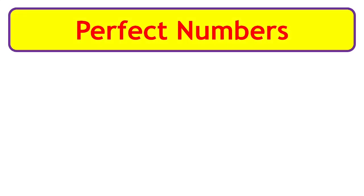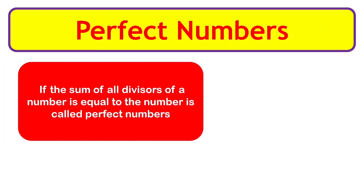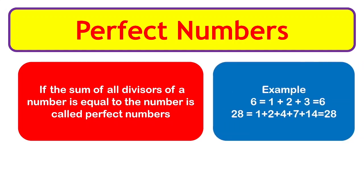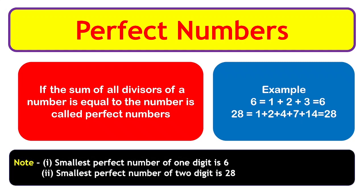Perfect numbers: if the sum of all divisors of a number equals the number itself, it is called a perfect number. Example: the factors of 6 are 1, 2, and 3, and 1 plus 2 plus 3 equals 6, so 6 is a perfect number. The factors of 28 are 1, 2, 4, 7, and 14, and their sum equals 28. Notes: the smallest one-digit perfect number is 6, and the smallest two-digit perfect number is 28.